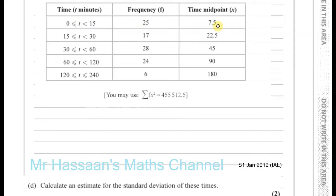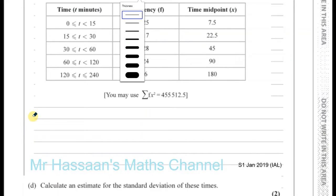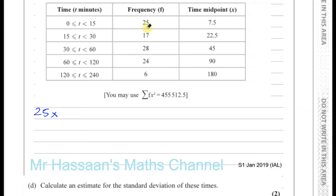So 25 times 7.5 gives us an estimate of the total times for those 25 people. We're going to do frequency times the mid-interval value for each group, add them all together, and that gives us an estimate of the total time spent exercising by all 100 people. So: 25 times 7.5, plus 17 times 22.5.